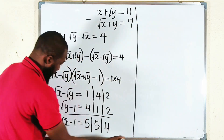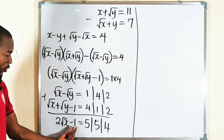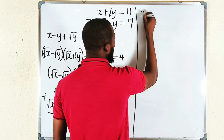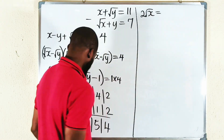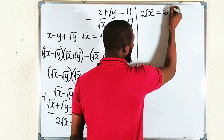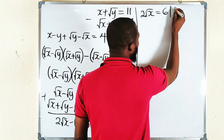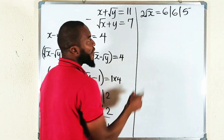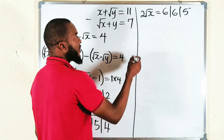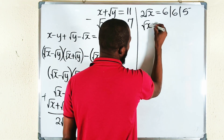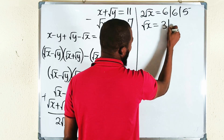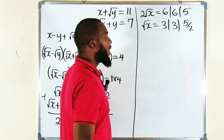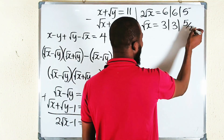Taking the negative 1 to the other side: 2 times square root of x equals 6, 6, or 5, depending on the combination. Dividing both sides by 2: square root of x equals 3, 3, or 5 over 2. But remember, it must be an integer, so we discard 5 over 2. Therefore, square root of x equals 3, and squaring both sides, x equals 9.